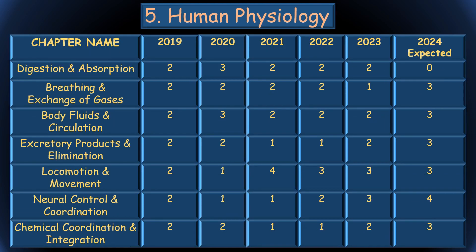In the Animal Physiology unit, there were seven chapters, but Digestion and Absorption has been deleted, so no questions will come from it. The other chapters will carry higher weightage accordingly: Breathing and Exchange of Gases — 3 questions; Body Fluids and Circulation — 3; Excretory Products and Elimination — 3; Locomotion and Movement — 3; Neural Control and Coordination — 4; Chemical Control and Integration — 3 questions.